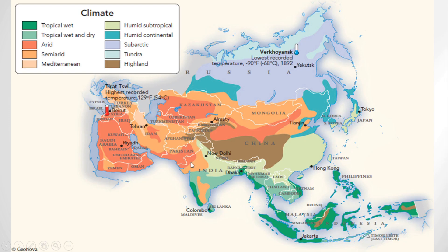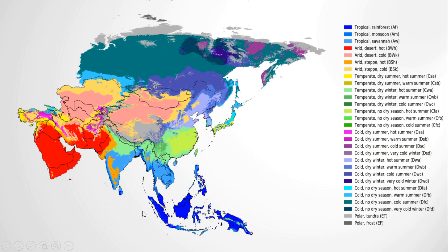South of the monsoon region we have the equatorial regions. They are the southernmost part of Asia from where the equator passes. The climate is very hot and wet and the annual rainfall is more than 300 cm. You can see this area here — the equator passes through and all these areas come under the equatorial type of climate.